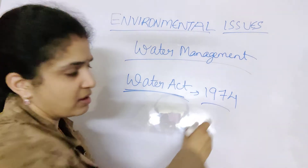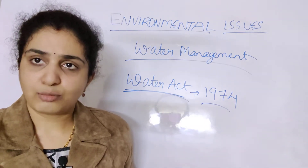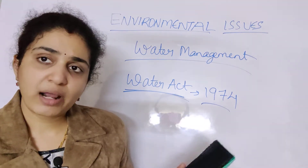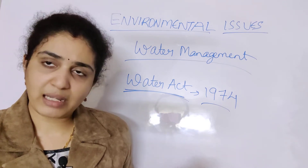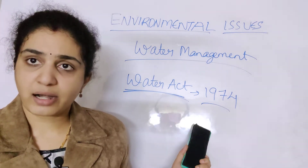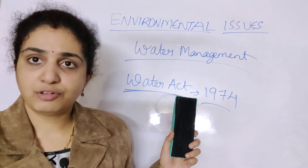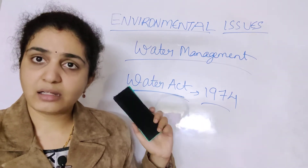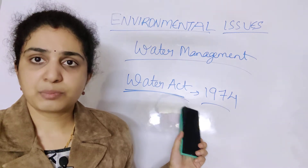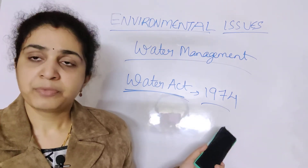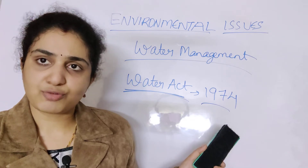The Water Act was given in the year 1974. This was the first act of its kind. The Environmental Act came in 1986. Do not get confused: Water Act is 1974, Environmental Act is 1986.